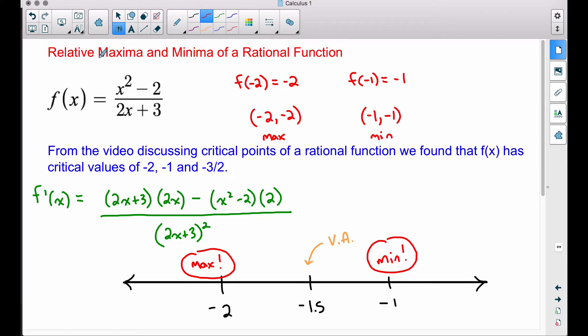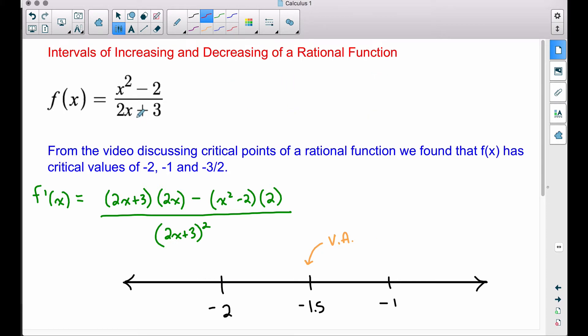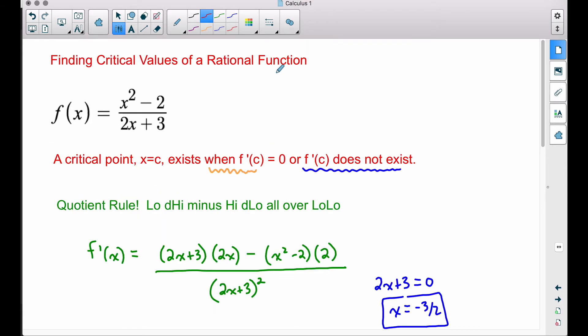And there you have it. That's how you find the relative maximum and minimum of a rational function. Of course, to get up to this point, you need to look at how to find the intervals of increasing and decreasing of a rational function, which was discussed in another video, and also how to find the critical values of a rational function.